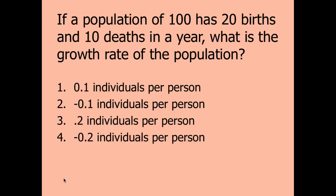Here's one for you to try on your own. With 100 individuals, 20 births, and 10 deaths: the birth rate is 20 ÷ 100 = 0.2, and the death rate is 10 ÷ 100 = 0.1. Subtracting gives a net growth rate of 0.2 − 0.1 = positive 0.1, or a 10% positive growth rate.